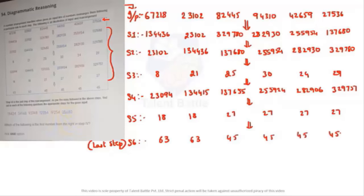Step six is the last step of the arrangement. So we have steps one through six — totally six steps — as rearrangement as per the rules. We need to find out the appropriate steps for the given input. The first question: which of the following is the first number from the right in step four? From the right means our right.